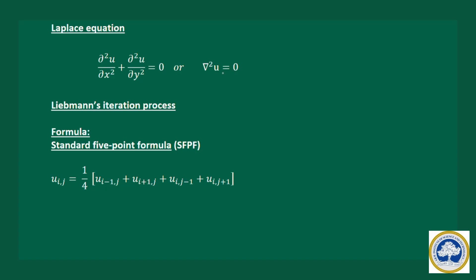We are going to solve this Laplace equation using Liebman's iteration method. For this, we need to remember two formulas: one is called the standard five-point formula, and the other is called the diagonal five-point formula.